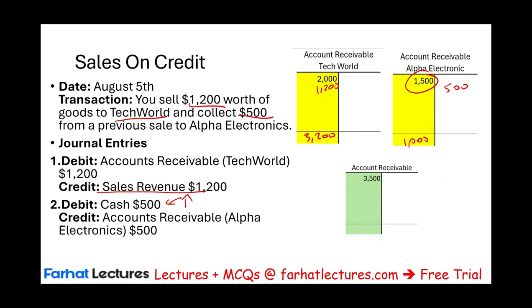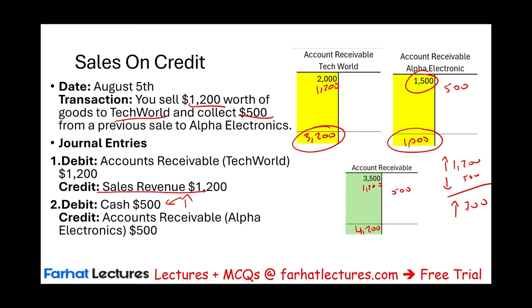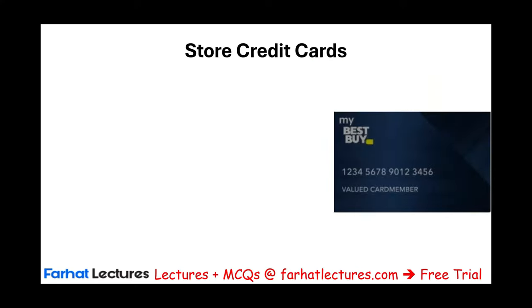After these transactions, Tech World's balance is $3,200 and Alpha Electronics' balance is $1,000. To update the general ledger, accounts receivable went up $1,200 and down $500, a net change of $700, giving us a new general ledger balance of $4,200. This equals $3,200 plus $1,000 — the ending balances for Tech World and Alpha — confirming that the sum of all individual sub ledgers equals the total general ledger.